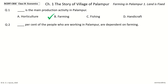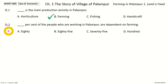Question 2: Dash percent of the people who are working in Palampur are dependent on farming. The options are 80, 85, 75, 100. Your time to choose. And the answer is 75. So, 75 percent of the people who are working in Palampur are dependent on farming.